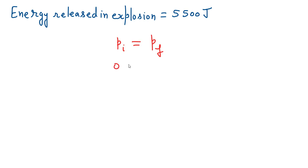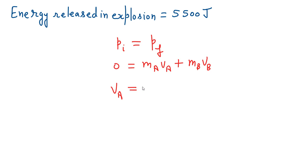We can write this as: zero equals m_a multiplied by v_a plus m_b multiplied by v_b, where m_a and m_b are the masses and v_a and v_b are the final velocities of the two masses, with zero initial momentum. Rewriting for v_a, we get v_a equals negative m_b times v_b divided by m_a. The negative sign indicates opposite direction.